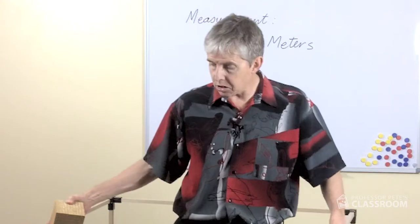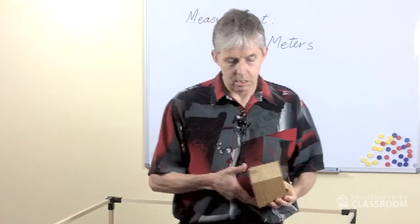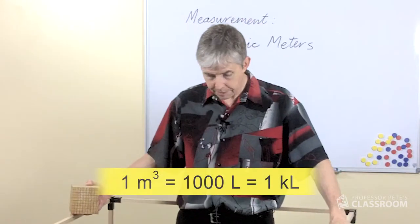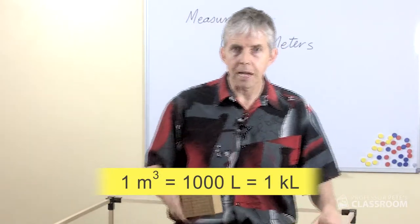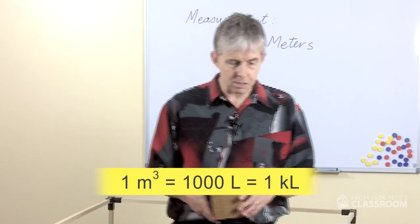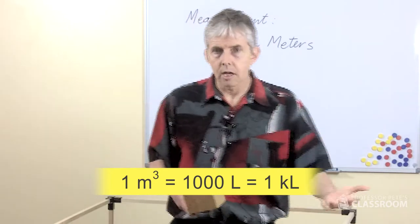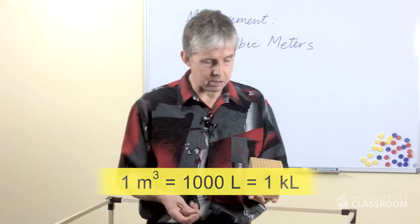And so we could fill this cube, if we had enough of these blocks, with 1,000 blocks or 1,000 liters. So one cubic meter has the same volume as 1,000 liters and in the metric system we have a unit for 1,000 liters of course and that's kiloliter.